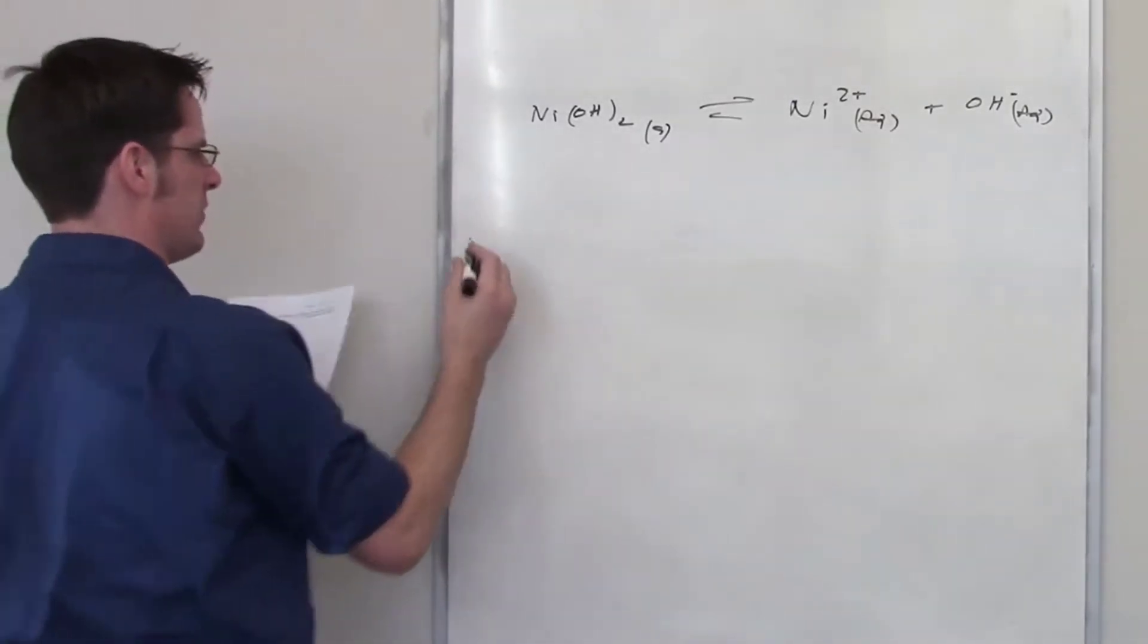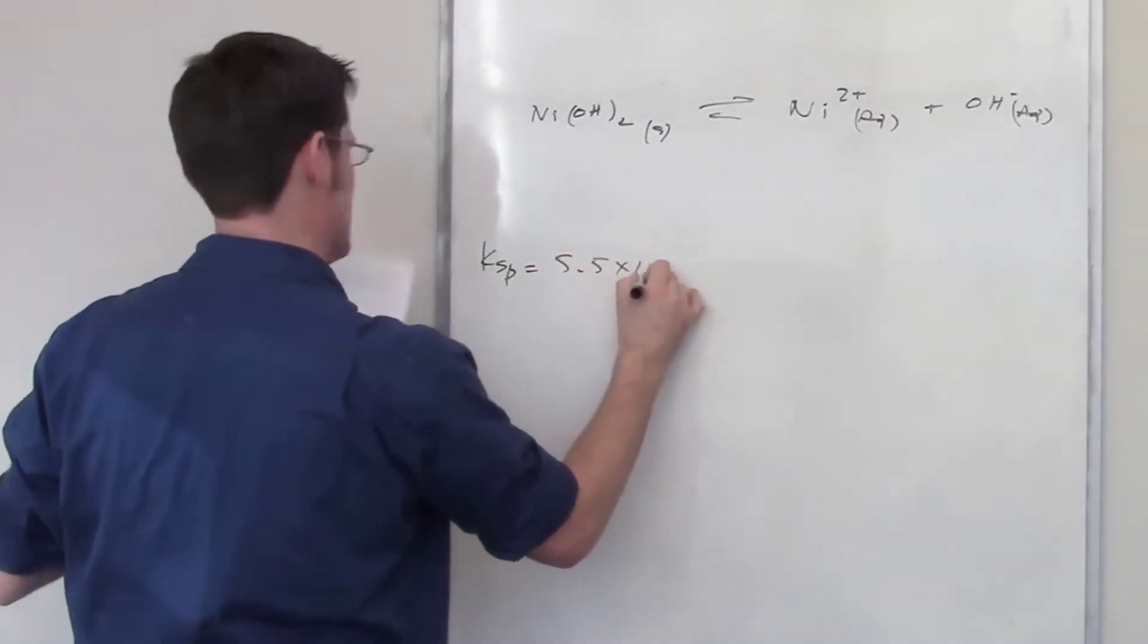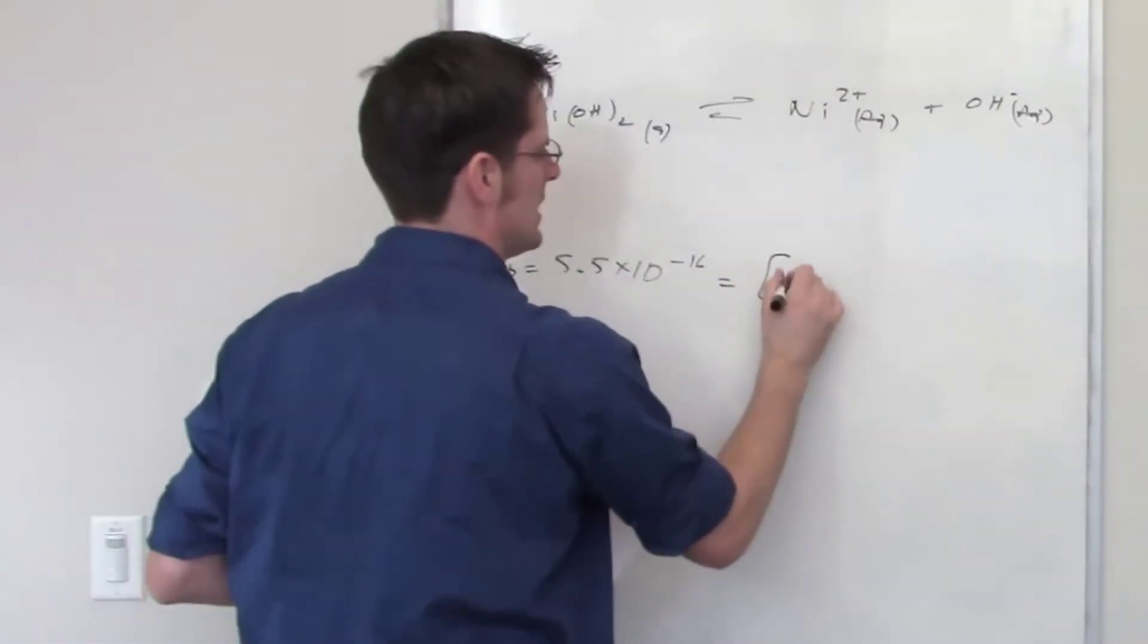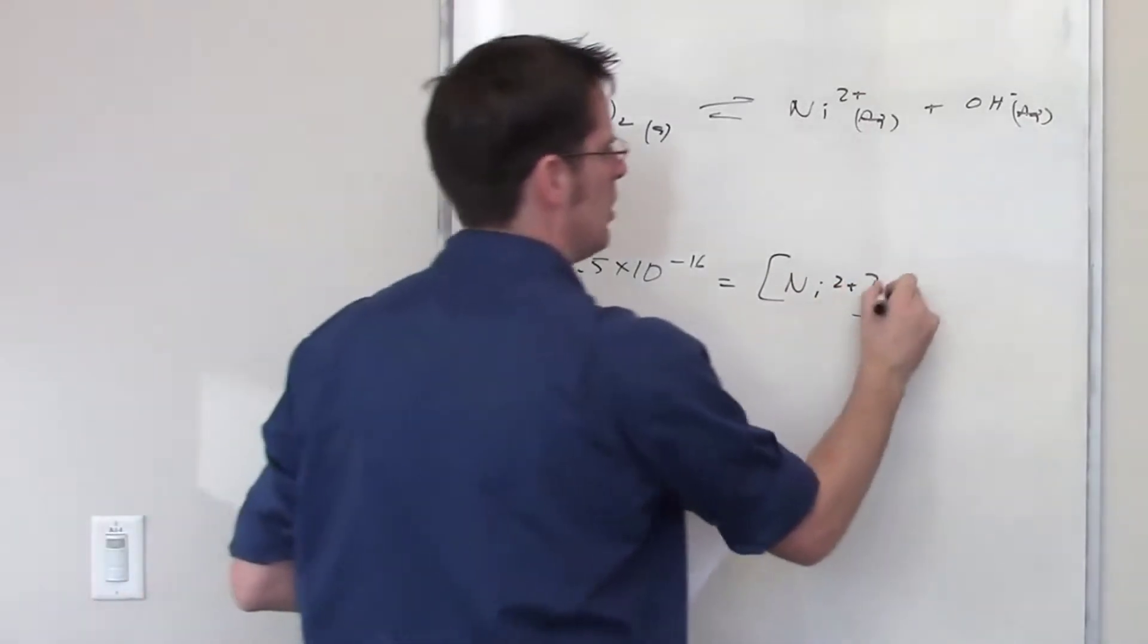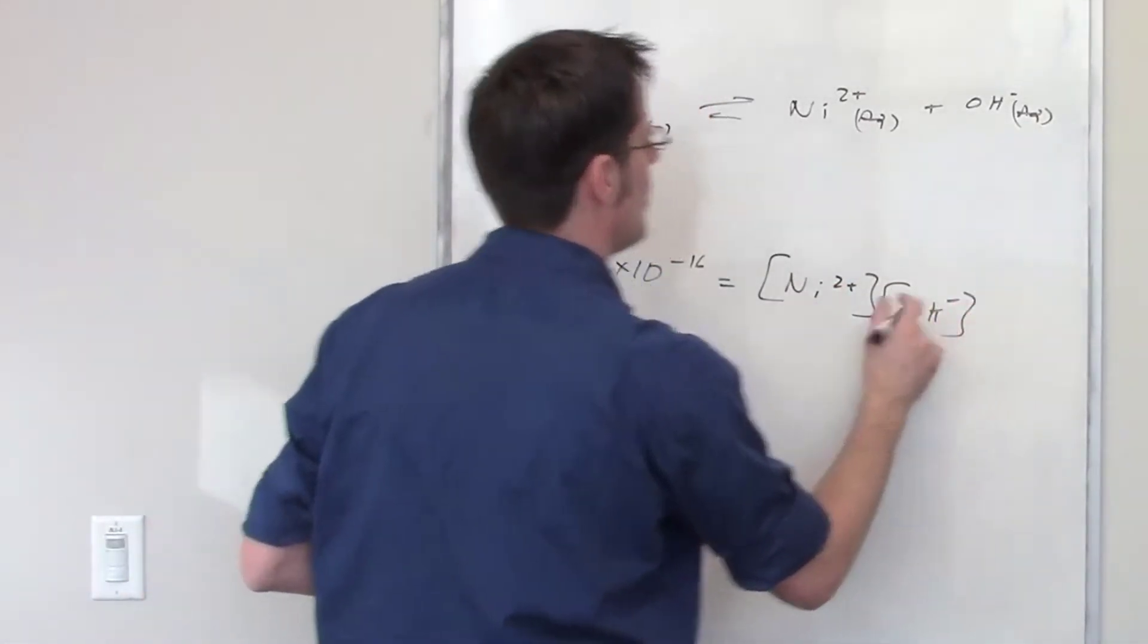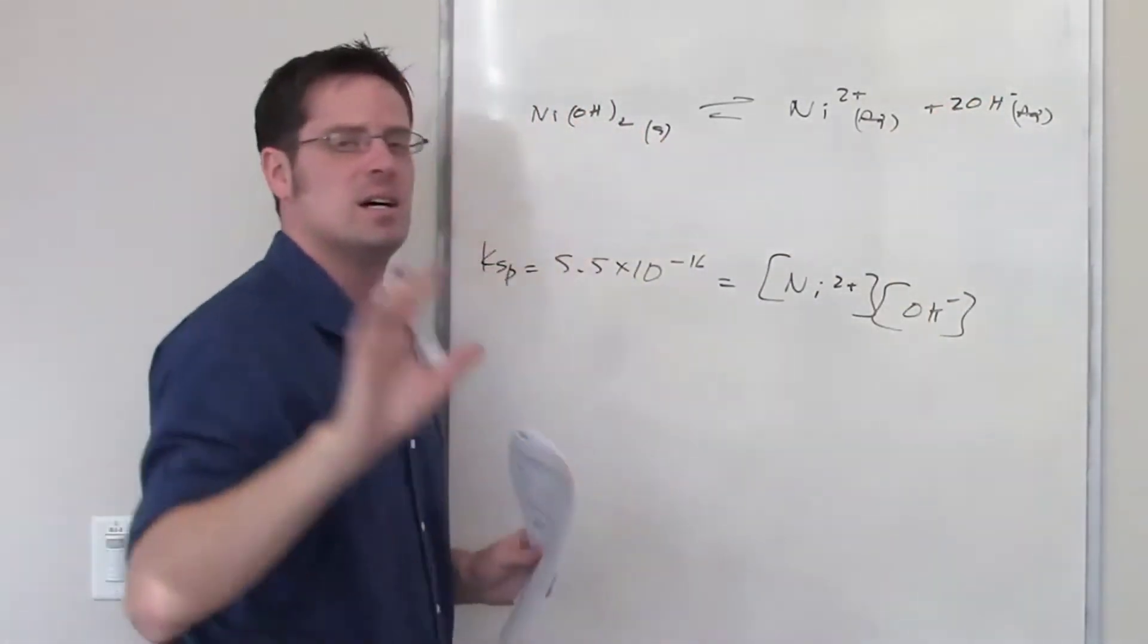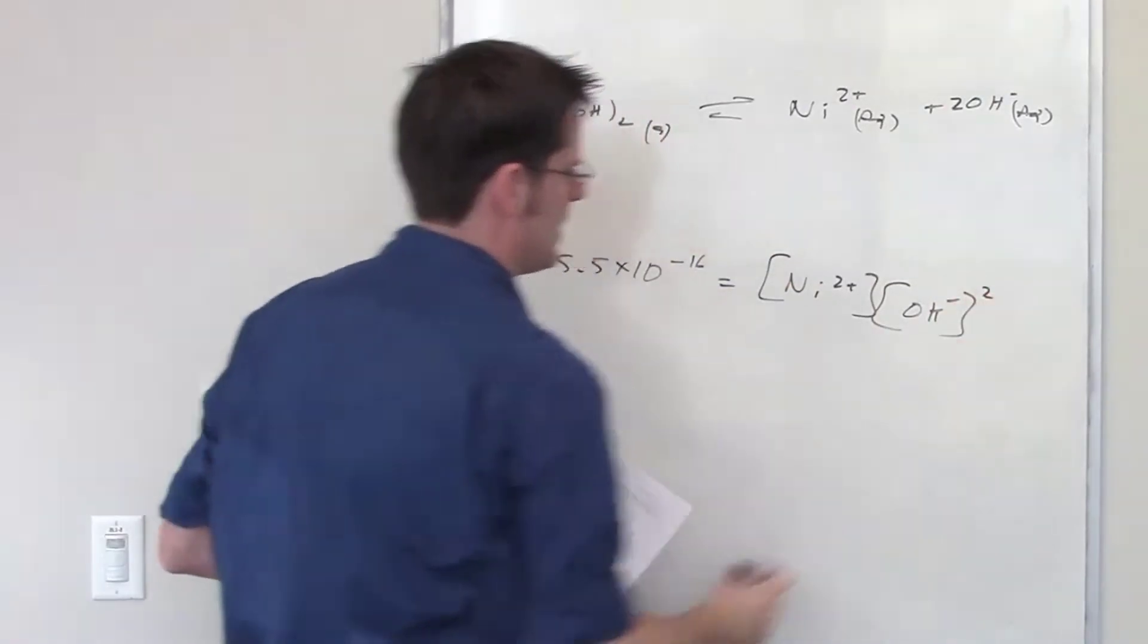It gives me the Ksp for this as being equal to 5.5 times 10 to the negative 16th. The Ksp expression is going to be equal then to the individual equilibrium concentrations of nickel 2 plus multiplied by hydroxide minus. And oh, I just realized that there are two hydroxide molar equivalents here, so I need to put a 2 in front of that. My apologies. That 2 is a coefficient here. It becomes an exponent right there.